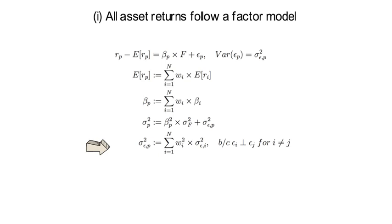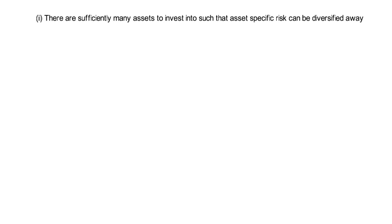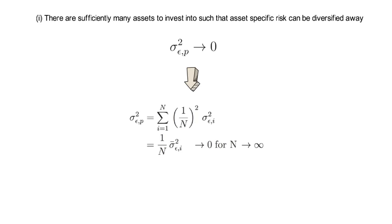This last equation holds because epsilon i is orthogonal to epsilon j — these are firm-specific shocks. Assumption 2 of the APT implies that N, the number of assets in the portfolio, is sufficiently large so that the variance of epsilon P goes to zero. For the equal-weight portfolio, the weight is 1/N, so sigma squared epsilon P equals the sum from i=1 to N of (1/N squared) times sigma squared epsilon i, which equals (1/N) times the average idiosyncratic risk — a term that goes to zero as N goes to infinity.